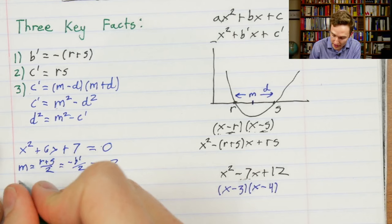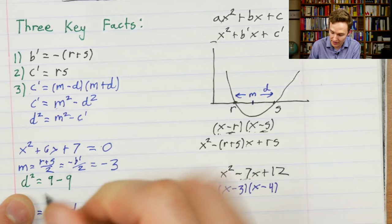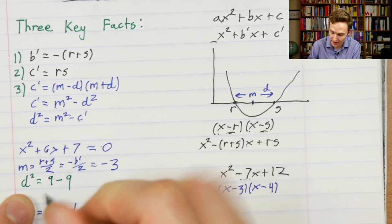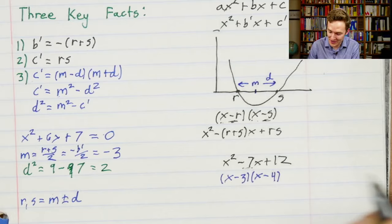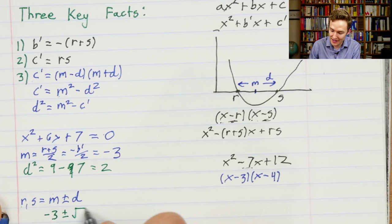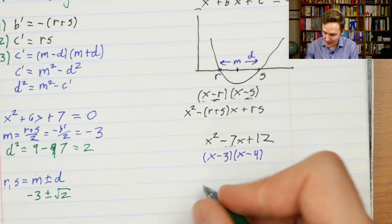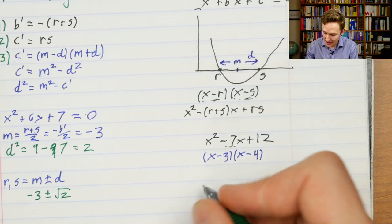We know both m and c′, so we can write that d²=m²−c′. In our example, d²=9−7=2. So our roots are m±d: that midpoint is 3, plus or minus √2. There you go! In general, for any quadratic, the midpoint is just (−b/2a) when the leading coefficient isn't already 1, and then the distance d is the square root of m²−p, where p is the product of the two roots — which is just the last coefficient in the rescaled quadratic. So if you want to think of the simpler quadratic formula: it's m±√(m²−p). All you do is find m, which is a simple factor times one of the coefficients, then find p, which is another coefficient.